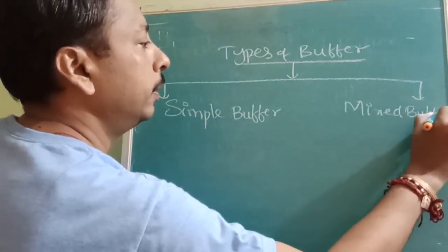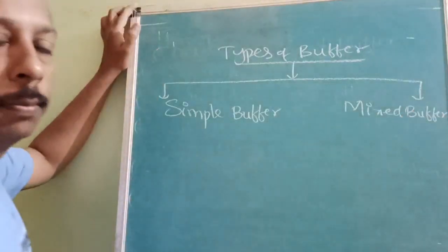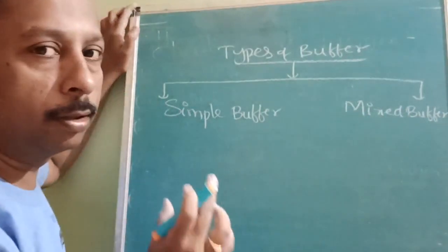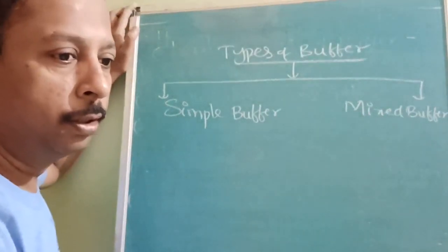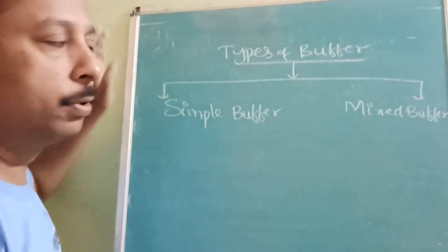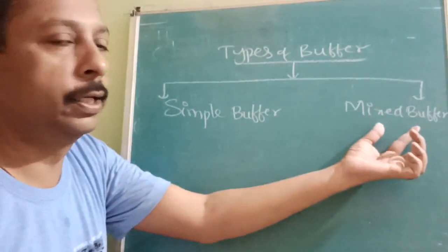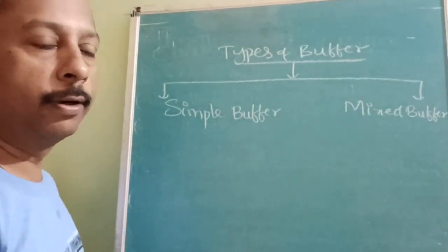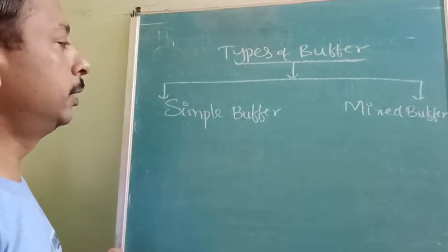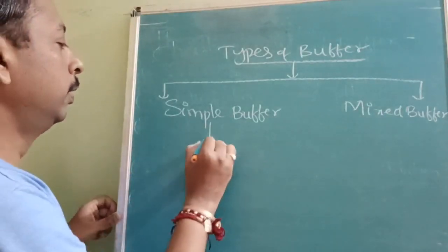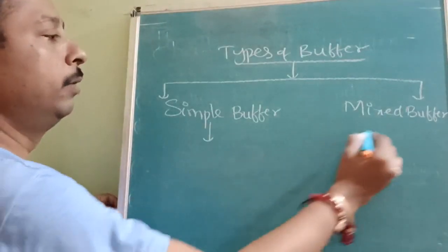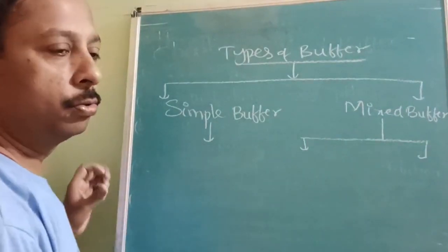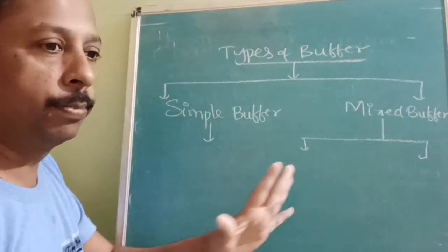Simple buffer is a single compound — one type of compound is available. Mixed buffer is a mixture of two compounds mixed together. These mixed buffers are further divided into two types, which I am going to cover separately with proper explanation, formula derivation, and how they are formed.